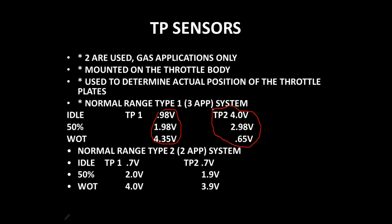On a Type 2 system, TP number 1 starts out at about 0.7 volts and rises to approximately 4 volts at wide open throttle. TP number 2 also starts at 0.7 volts and rises to a little less than 4 volts at wide open throttle. So the three-sensor system uses a different voltage range on the TP sensors than the two-sensor system uses.